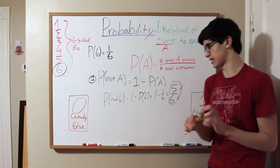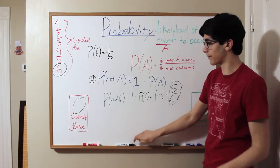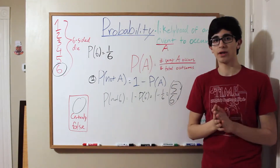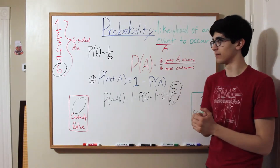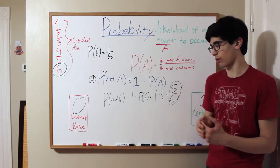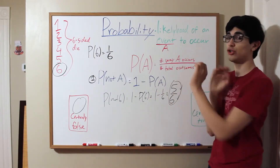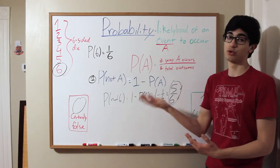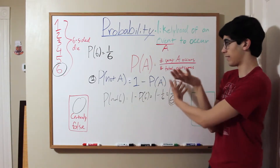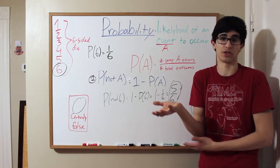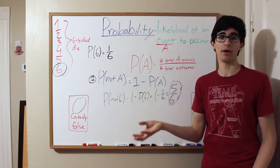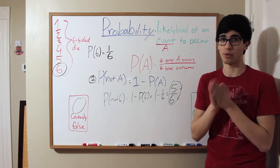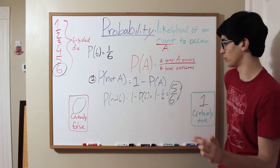You might wonder why we need this concept when you can just count. Well, if the probability is something like 67 over 14,000 — where the number of total outcomes is huge — you can't necessarily count the number of ways something doesn't happen. If there are only two options and you know one of them, and the sample size is too large to count the other, you take 1 minus the option you already know and immediately get the other. This is especially helpful when dealing with probabilities you don't want, and knowing what that means in your problem.